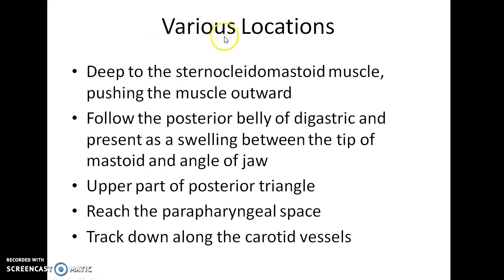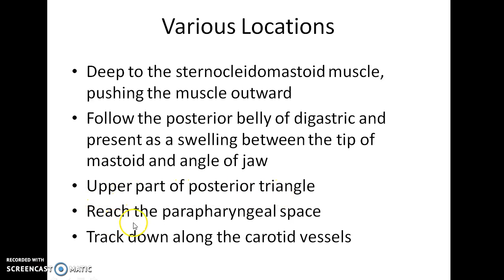What are the various locations of Bezold's abscess? It can lie deep to the sternocleidomastoid muscle, pushing the muscle outward. It can follow the posterior belly of the digastric and present as a swelling between the tip of the mastoid and angle of jaw. It can be present in the upper part of the posterior triangle, reach the parapharyngeal space, or track down along the carotid vessels.